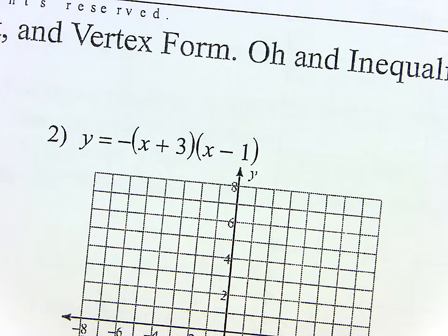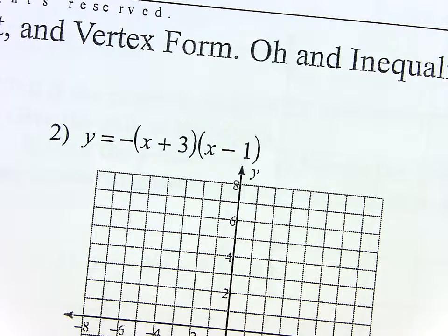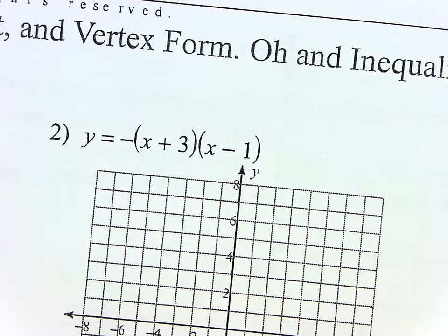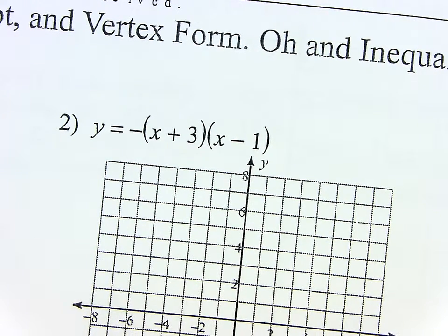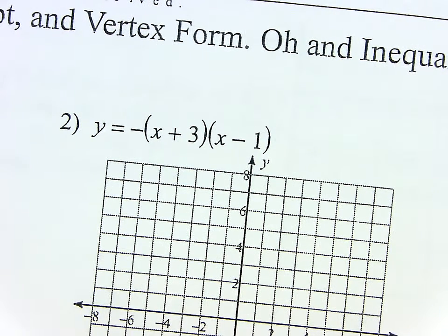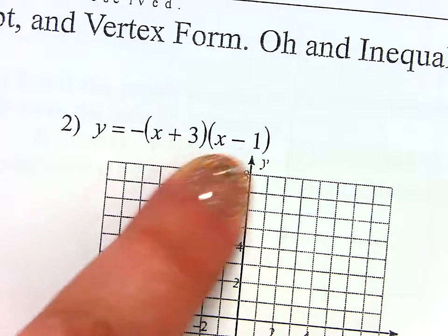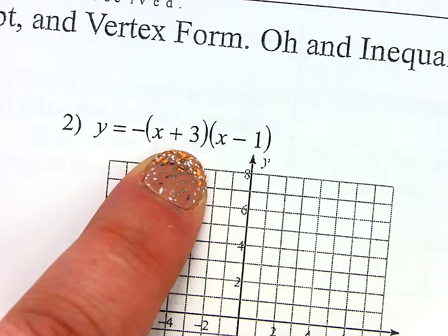So if I take a quadratic and I factor it, remember when you solve a quadratic, you factored it and then you set each factor equal to zero and you got two answers? What did they mean, those two numbers?